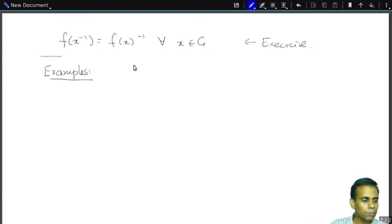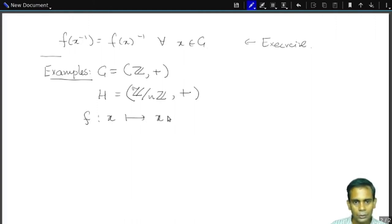So look at the group Z with addition. And take H to be the group Z mod NZ, residue classes mod N with addition. Then F taking an element G or maybe X goes to its residue class mod N, which I'll write X plus NZ is a homomorphism.